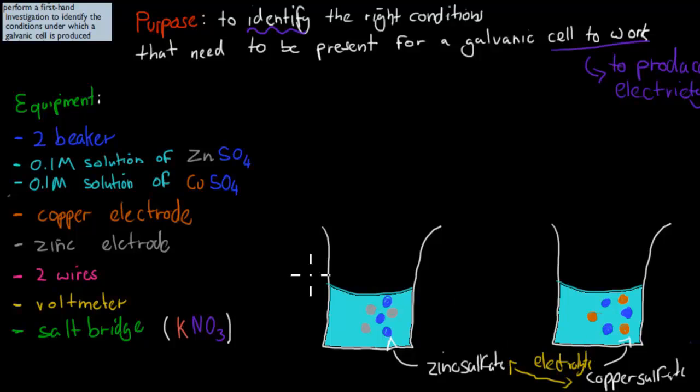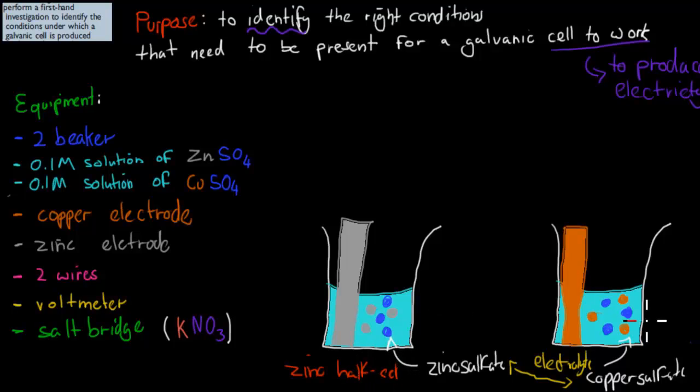Next, we need to make sure we have our copper and zinc electrode. We put the zinc electrode in our zinc half cell, which is this one which has the zinc solution. So here is our zinc electrode. Our copper electrode goes into the copper beaker, the copper half cell. Now this is our zinc half cell, and over here is our copper half cell.